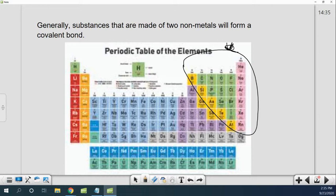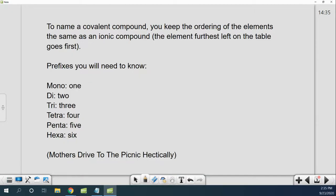Now why do we care what a covalent bond is? Well because it's got its own special naming rules. To name a covalent compound, we're going to keep the ordering of the elements the same. The element furthest left on the periodic table goes first.